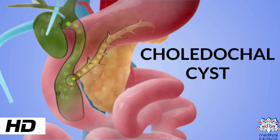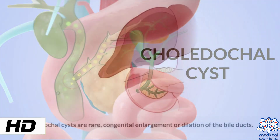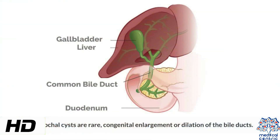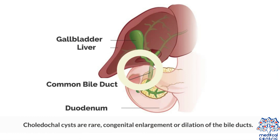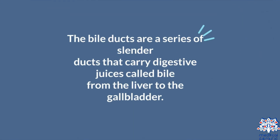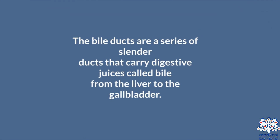Today's topic is Choledocal cyst. Choledocal cysts are rare congenital enlargement or dilation of the bile ducts. The bile ducts are a series of slender ducts that carry digestive juices, called bile, from the liver to the gallbladder.